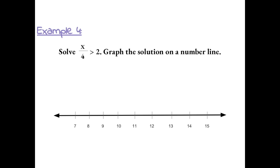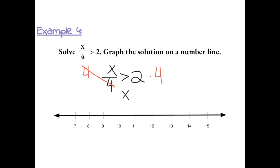Example 4: solve x divided by 4 is greater than 2, and graph the solution on a number line. In this case, x is being divided by 4, so we're going to do the inverse and multiply by 4 on both sides. 4 over 4 is 1, and 1 times x leaves us with x. x is greater than 2 times 4, which is 8.